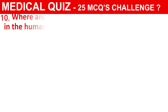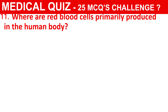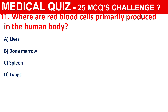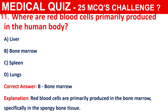Question 11: Where are red blood cells primarily produced in the human body? The options are Liver, Bone Marrow, Spleen, or Lungs. The correct answer is B, that is Bone Marrow. Red blood cells are primarily produced in the bone marrow, specifically in the spongy bone tissue.